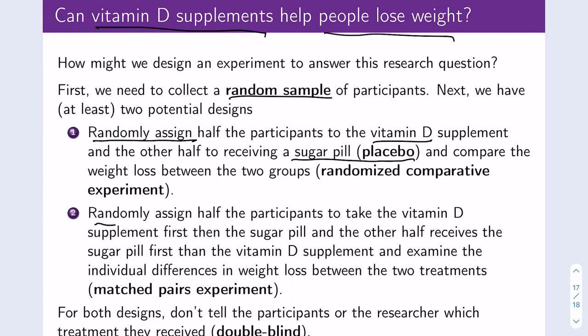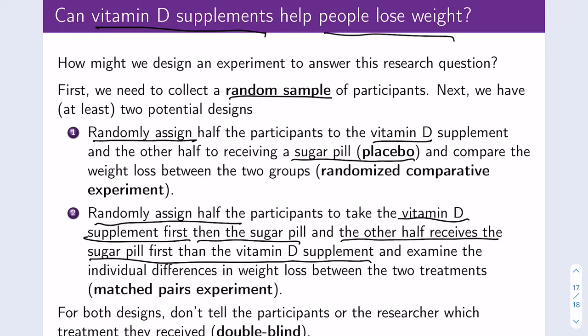Another option is a matched pairs experiment: randomly assign half the participants to take vitamin D first, then the sugar pill, and the other half receives the sugar pill first, then the vitamin D supplement. We then examine individual differences in weight loss between the two treatments. In this case, each person acts as their own control — did each individual lose weight when receiving vitamin D versus the placebo?